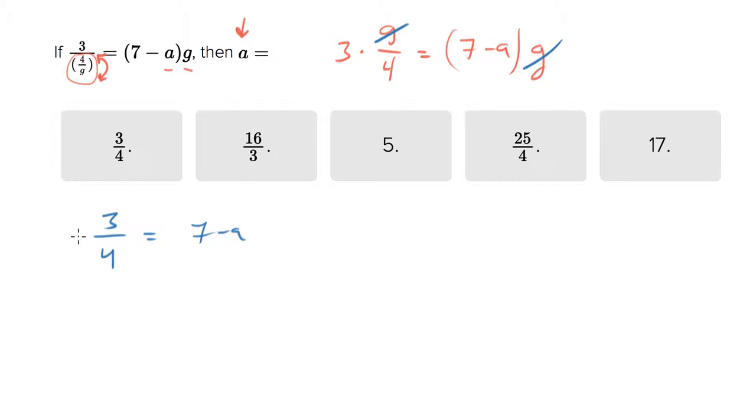Let's multiply both sides by 4 and what you end up with is 3 equals 28 minus 4A, or 4A equals 28 minus 3, or A equals 25 over 4.